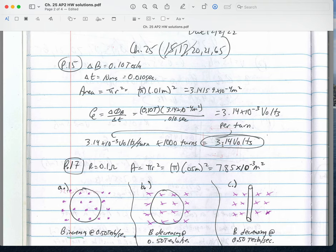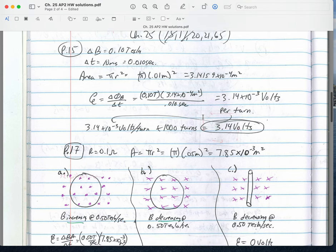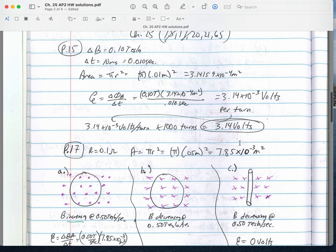I got the area. Change in flux over time is equal to the EMF, so that's flux over time: 0.1 Tesla over 0.01 seconds multiplied by the area is 3.14 times 10 to the negative third volts. But we have a thousand turns, so that's the amount generated per turn or per loop. We end up getting 3.14 volts. That's very similar to how we felt more of a shock when we got at the big Tesla coil because there were so many coils that caused a bigger effect.